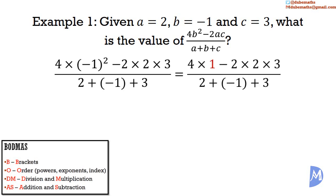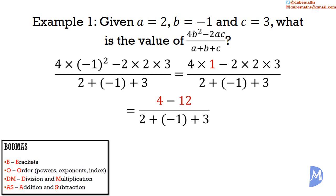Next, we work out division and multiplication from left to right. 4 multiplied by 1 is equal to 4, and negative 2 multiplied by 2 is equal to negative 4. Negative 4 multiplied by positive 3 is equal to negative 12. Then we do addition and subtraction from left to right. 4 subtract 12 is equal to negative 8, and 2 added to negative 1 is equal to 1. 1 added to 3 is equal to 4, so we get negative 8 over 4. Negative 8 divided by 4: 8 divided by 4 is equal to 2, and negative divided by positive is a negative, so we have negative 2.